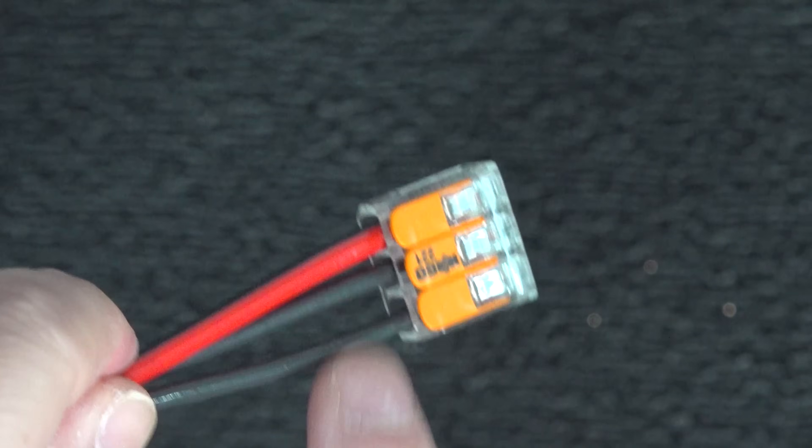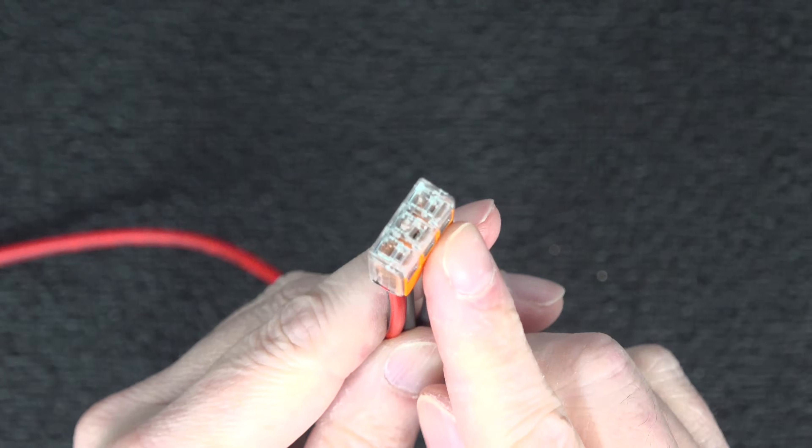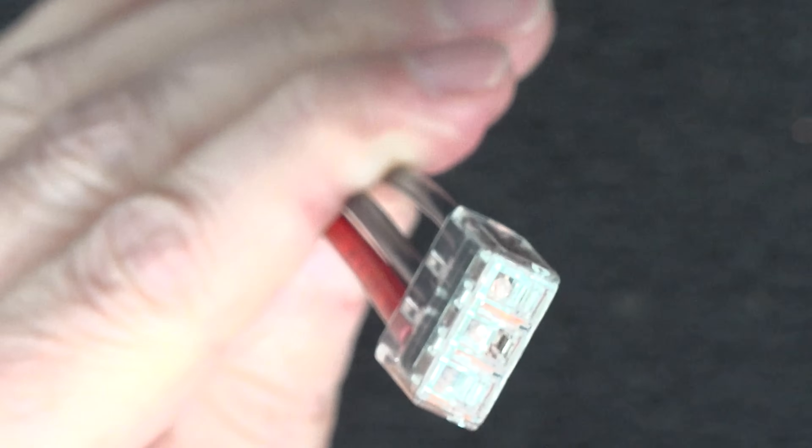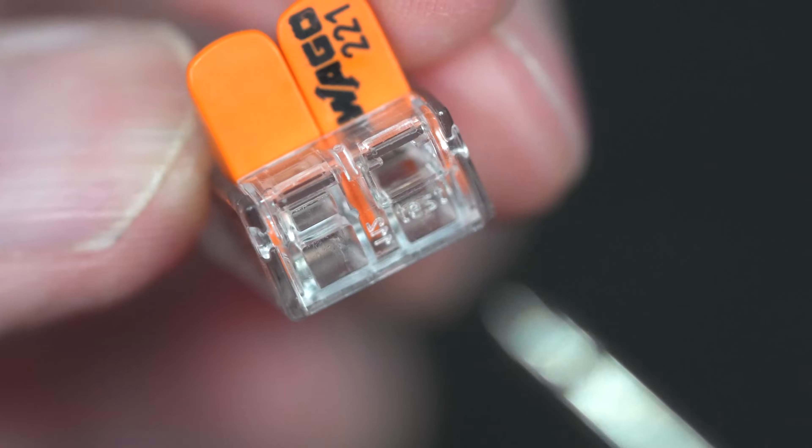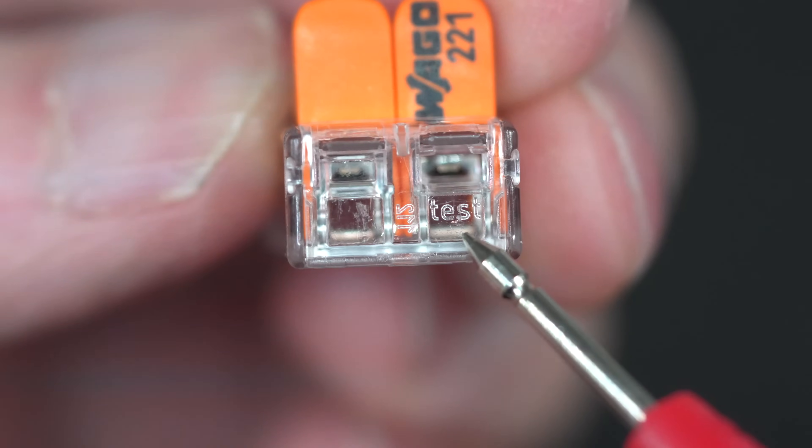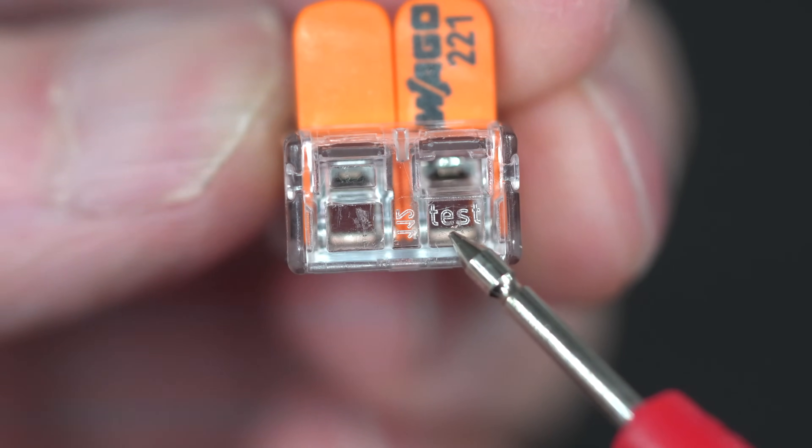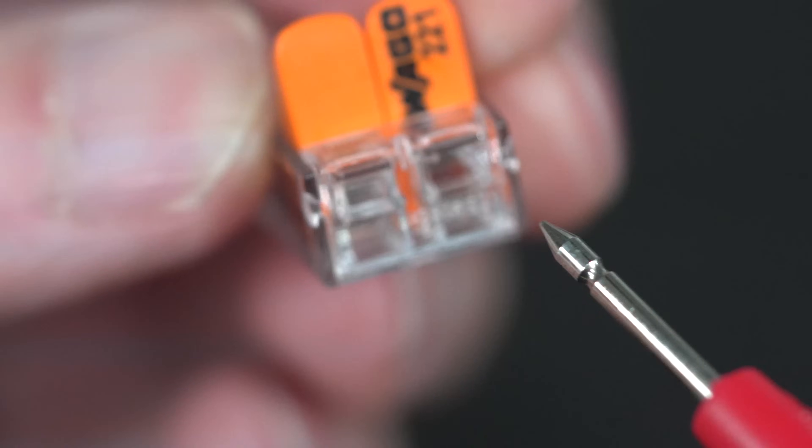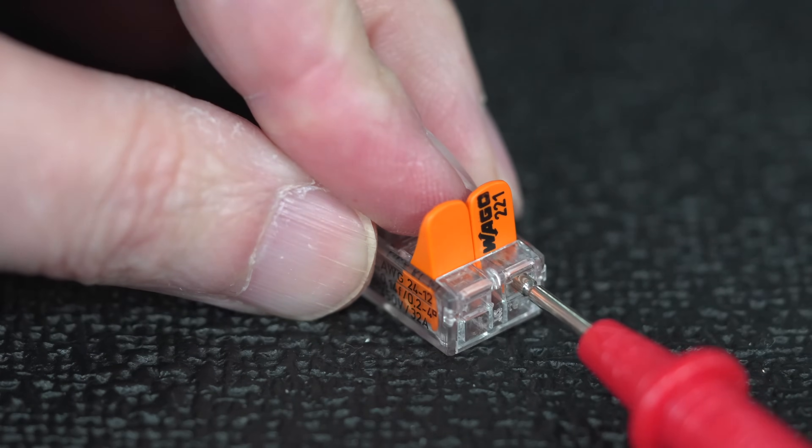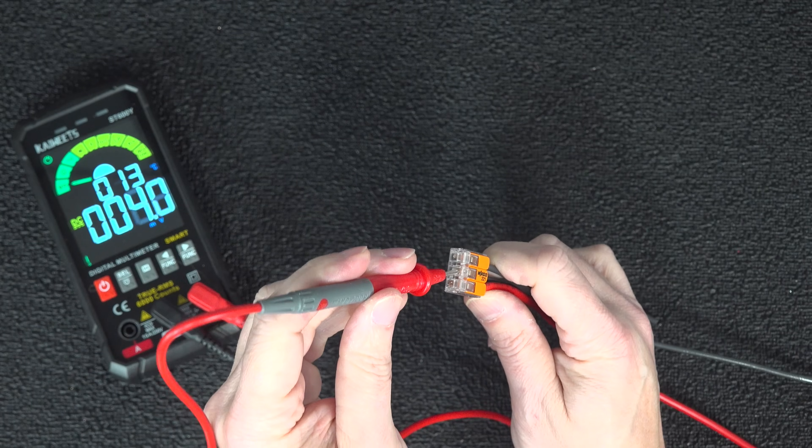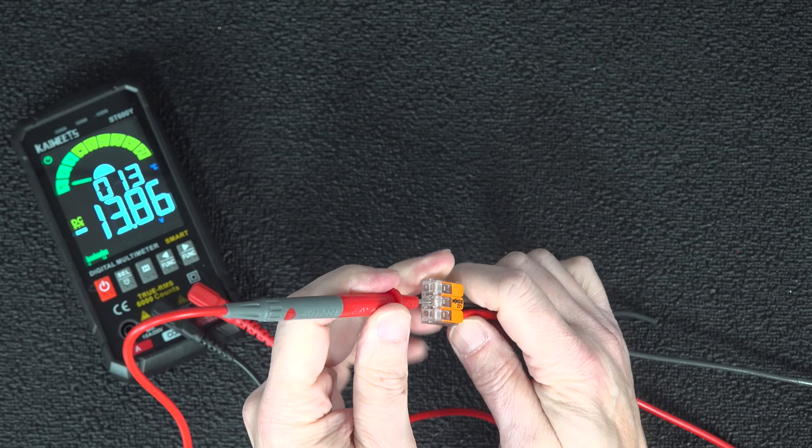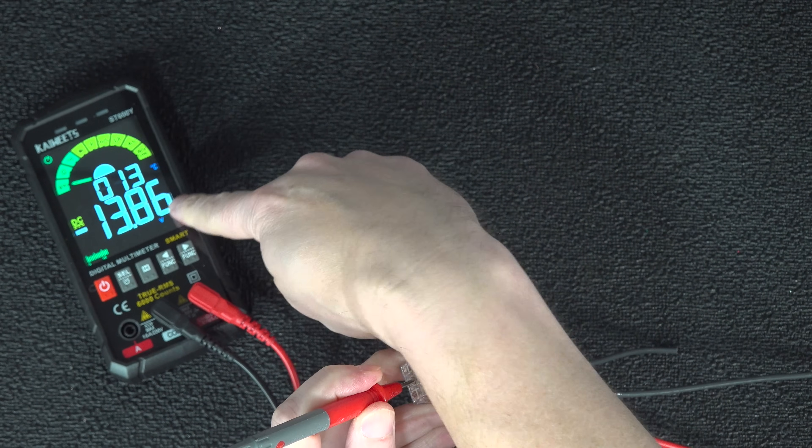But they've also got another feature built into every one of these connectors. When you look at the end, there's a tiny port that's labeled test. And this is where you can insert one of the probes from an electrical meter. This is a great feature if you're trying to troubleshoot a connection, or you want to just verify the amount of voltage that's going through. You just insert the probe into the end, and now you connect it directly to the inside of that connector.